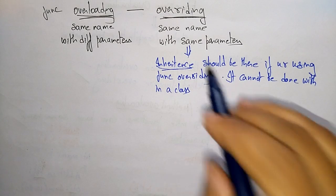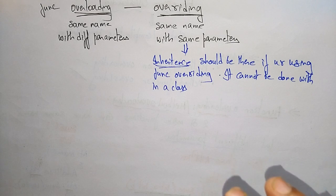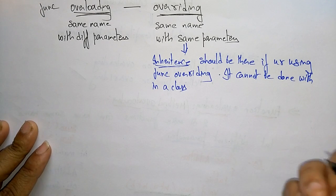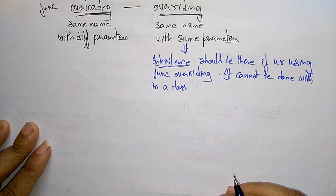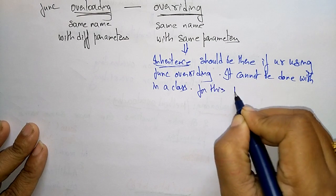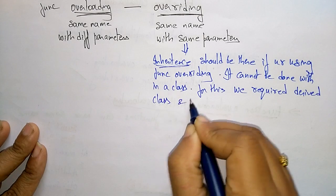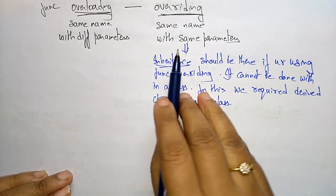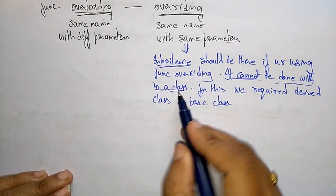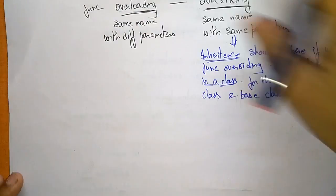Whereas in overriding — same name, same parameters — at execution time it may be confused about which function to call. That is why we use the inheritance concept, so we can use a base class and a derived class. One function is placed in the base class and one in the derived class, so there is no confusion. Same name with same parameters cannot be done within a class — for this, we require a derived class and a base class.